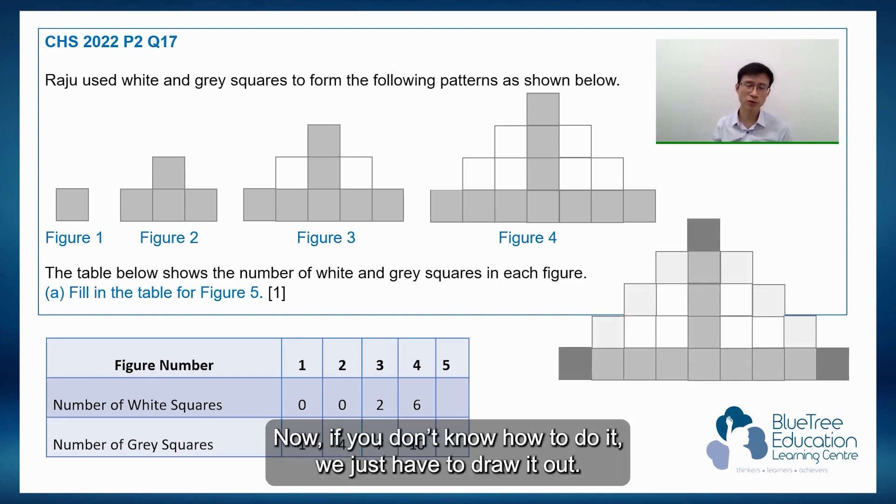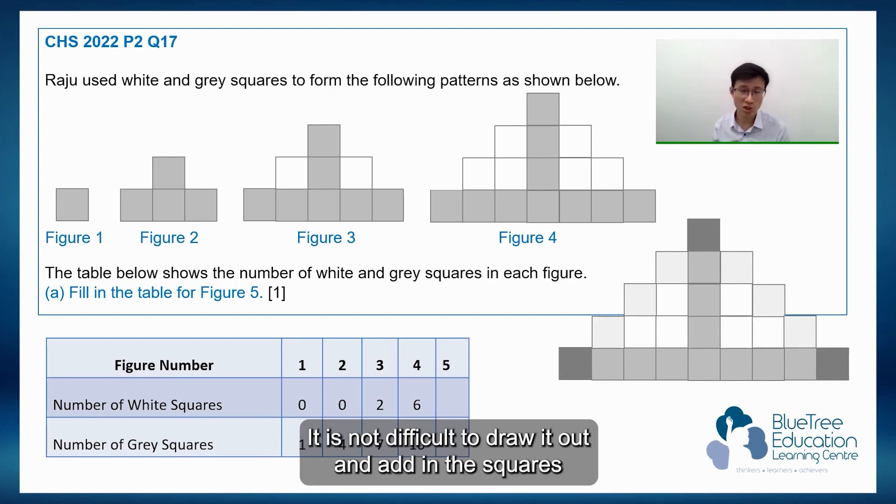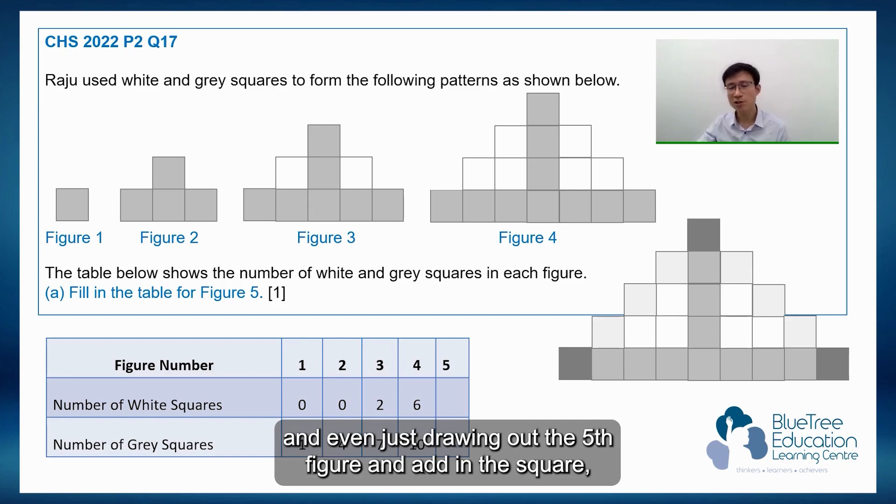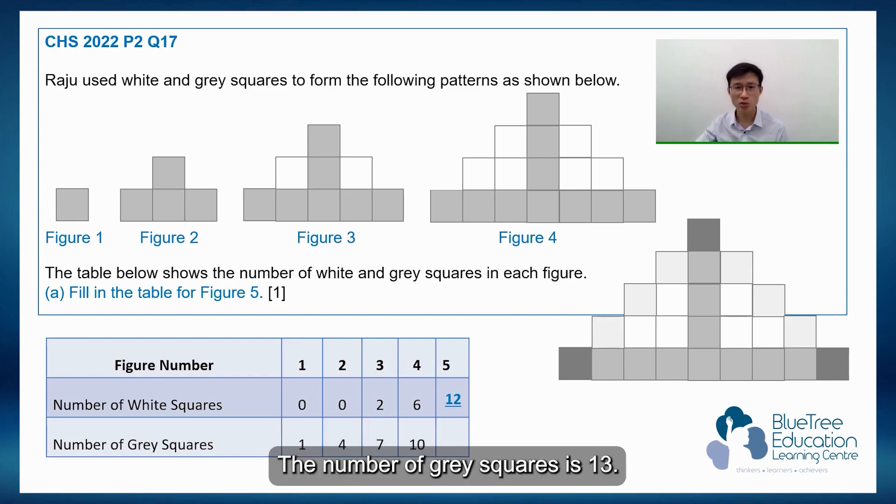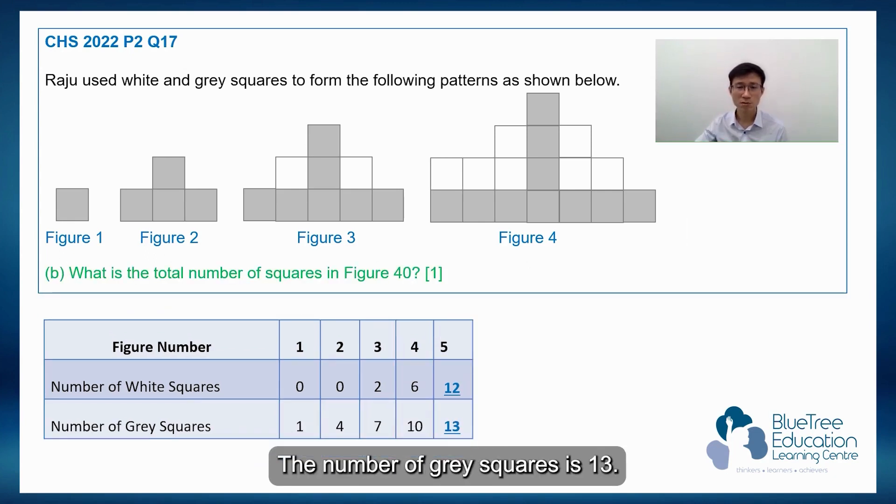Now, if you don't know how to do it, we just have to draw it out. It is not difficult to draw it out and add in the squares. If I just draw out the fifth figure and add in the squares, I realize that the number of white squares is 12, and the number of gray squares is 13. So I can do that by just drawing.